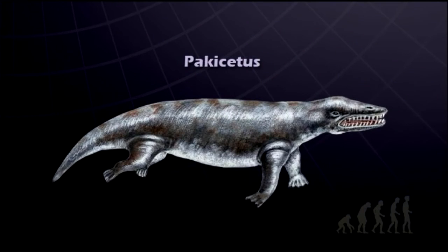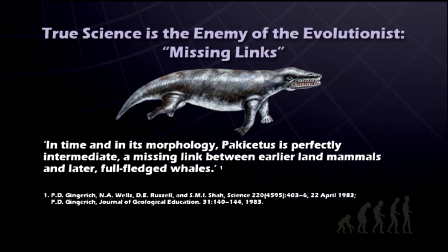To give examples of this, we're going to talk about some of the missing links that did a gross extrapolation on the evidence or invoked artistic license when trying to promote a certain transitional form. This example is Pacacetus. The quote is: 'In time and in its morphology, Pacacetus is perfectly intermediate, a missing link between earlier land mammals and later full-fledged whales.' An artist was hired to devise a conception that really looks like a transitional form between a land animal and a whale — it has legs that look like they're turning into flippers, and appears to be hunting food. A very powerful visual to make the case that Pacacetus was a transitional form between land animals and whales.